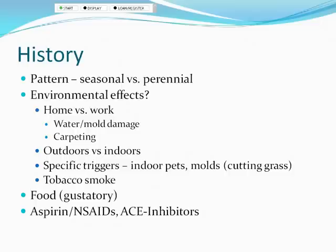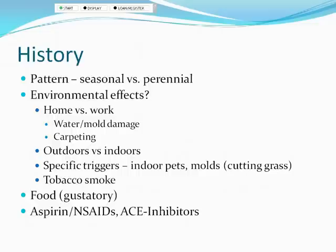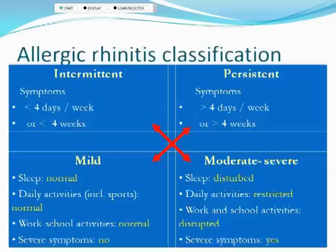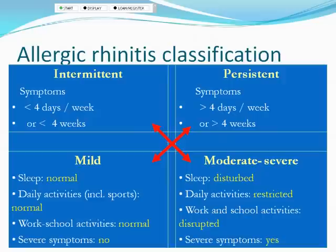Ask about specific triggers: indoor dogs or cats, visiting family with pets, mold in buildings, or mold disturbed when cutting grass. Also consider tobacco smoke, spicy foods, and medications. Aspirin and NSAIDs prompt thinking about the classic Samter's triad of polyps, asthma, and aspirin sensitivity. ACE inhibitors can cause not just cough but also rhinitis, as can beta blockers.